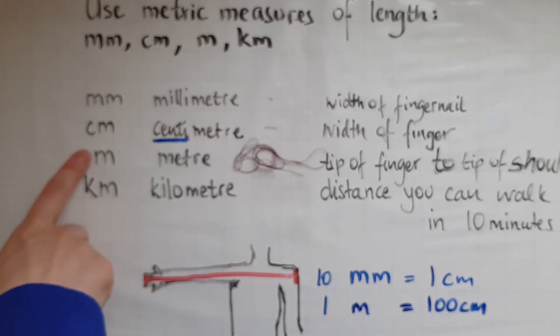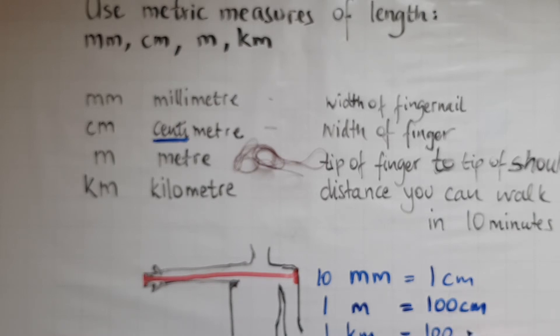And we'll look at how many meters there are in one kilometer. A kilometer is made by a thousand meters.